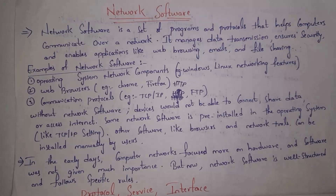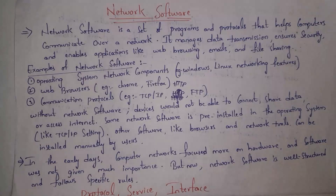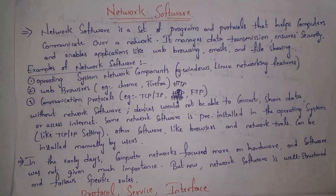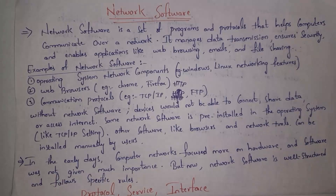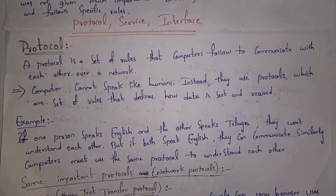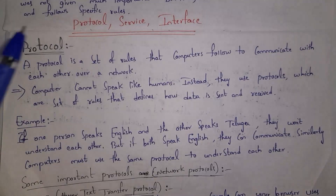In olden days, computer networks focused mainly on hardware parts like routers, switches, and cables, and there was not much focus on software. But at present, both network hardware and network software are given equal importance.